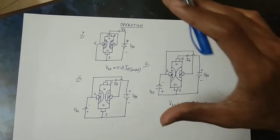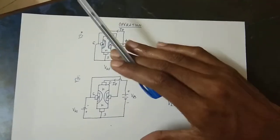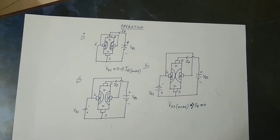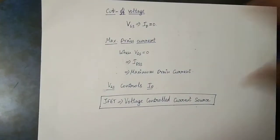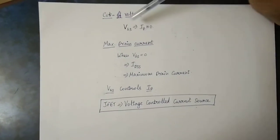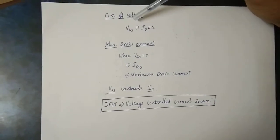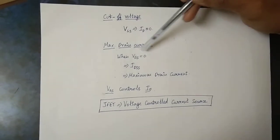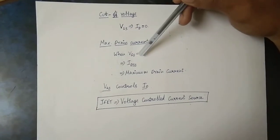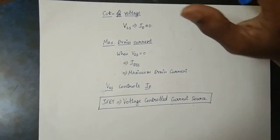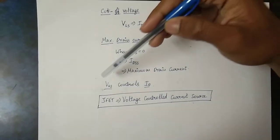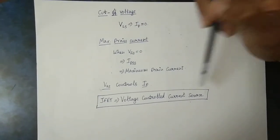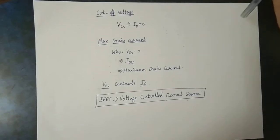This is why JFET is called a Field Effect Transistor — the external electric field controls the output current. When VGS is at cutoff voltage, the drain current ID becomes zero. When VGS is 0, the drain current is at maximum, which is called IDSS — the maximum drain current. Therefore, VGS controls ID, and JFET is a voltage-controlled current device.